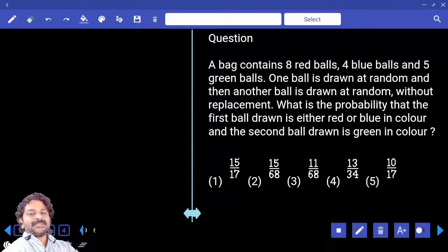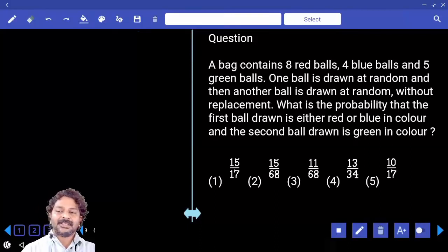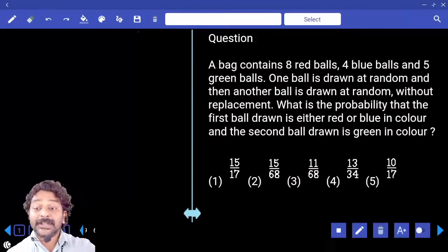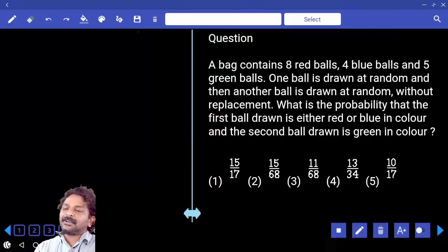The bag contains eight red balls, four blue balls, and five green balls. One ball is drawn at random and then another ball is drawn at random without replacement. What is the probability that the first ball drawn is either red or blue in color and the second ball drawn is green in color?